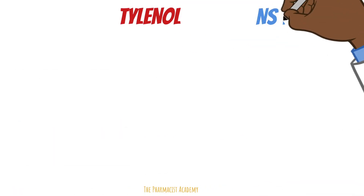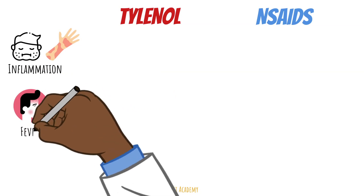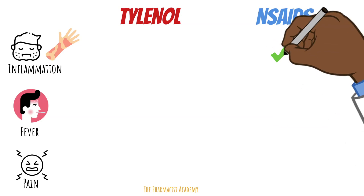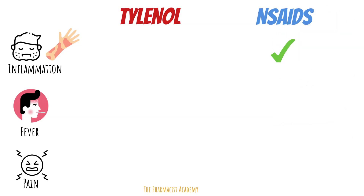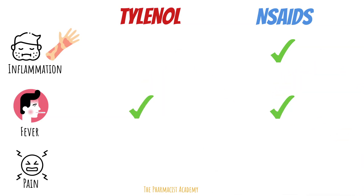We use these agents for three main things: inflammation, fever, and pain. If there is inflammation like swelling, redness, and itching, you would use NSAIDs — Tylenol does not have this effect in the peripheral tissues. For fever, you can use Tylenol or NSAIDs. Research suggests that Tylenol and ibuprofen have similar effects in controlling fevers, so pick what's best for you.